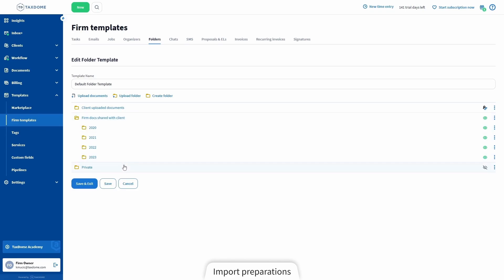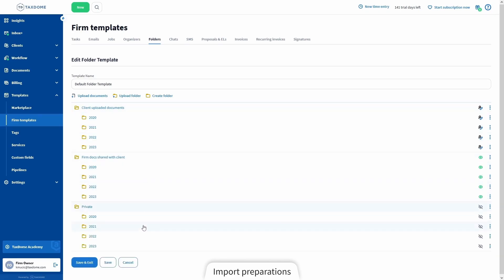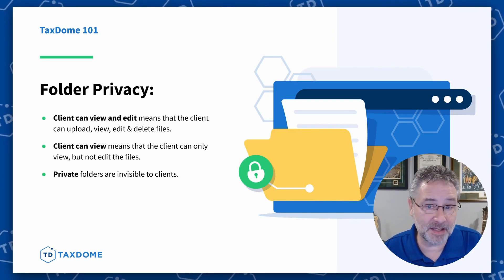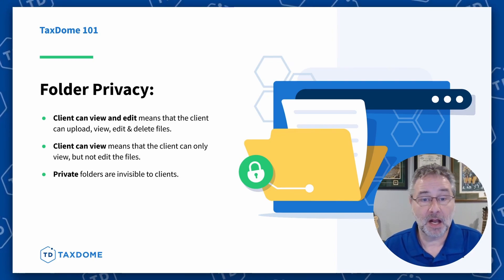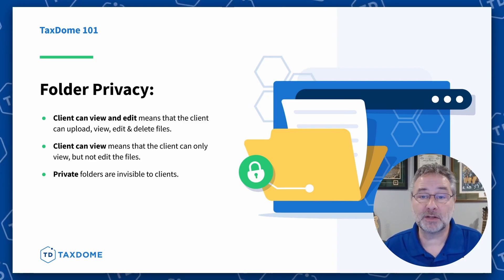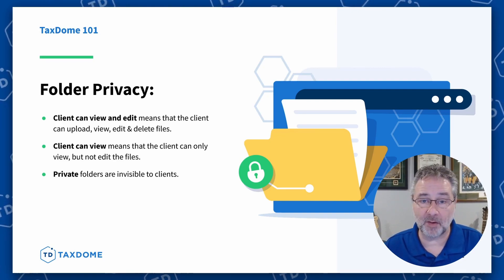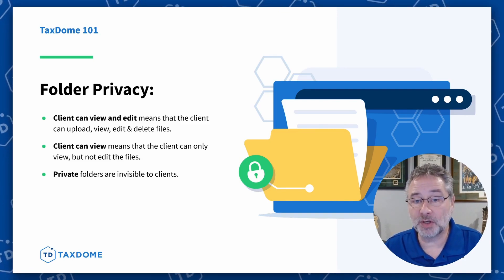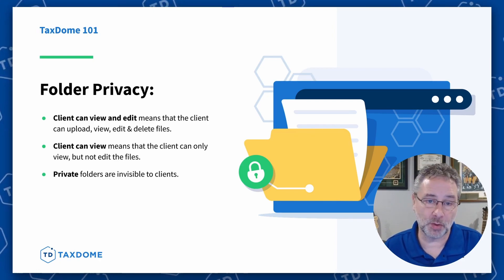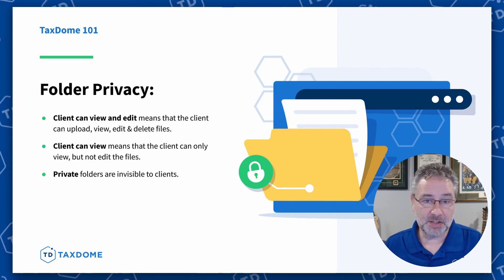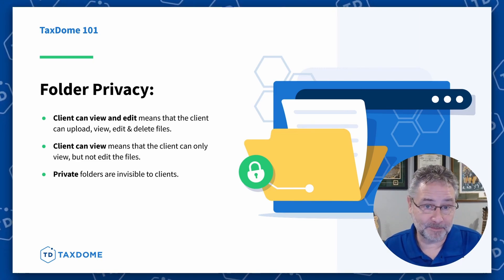The important things to know about folder templates: you can make as many folders and subfolders as you want. You can set every top-level folder to one of three privacy settings — Client can view and edit, which means the client can access and modify the contents; Client can view, which only allows viewing and downloading; and Private, which is not visible to the client at all and is just for you and your team. So when you set up folder templates, pay attention to the types of folders you create. Someone from our team sent a link to our help article about folder templates, so take a look if you'd like to learn more.